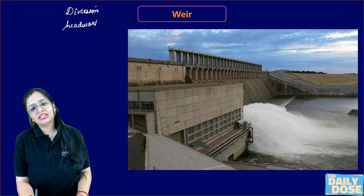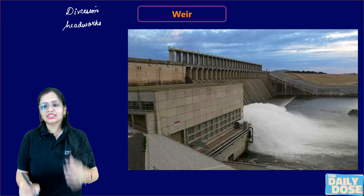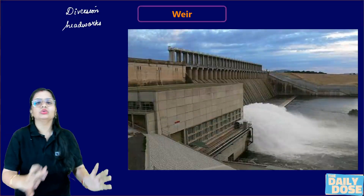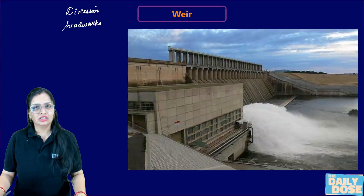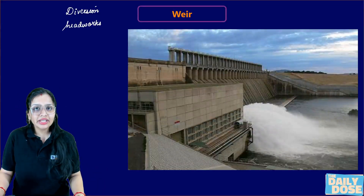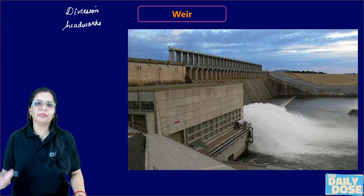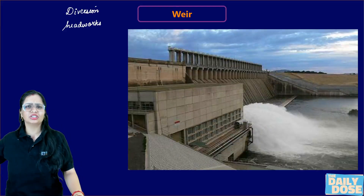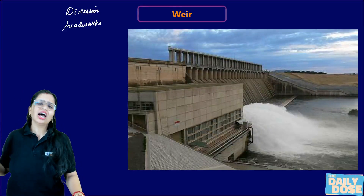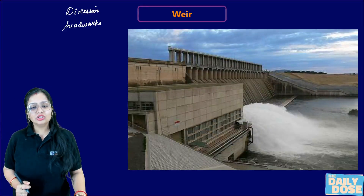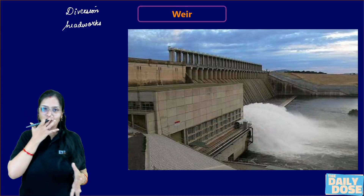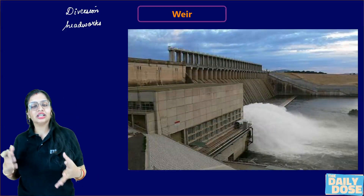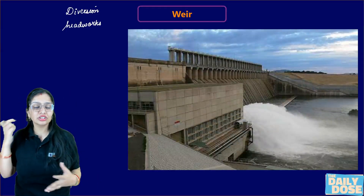With diversion headworks, you just construct the structure and divert the water into the main canal. From the main canal it flows to branch, then major, then minor canals and so on. So you could simply divert the flow of water — why would there be a need to construct a dam costing crores and crores?